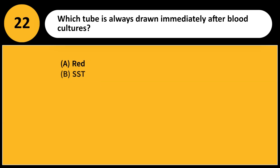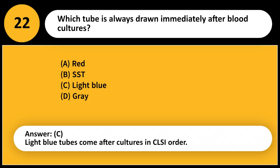Which tube is always drawn immediately after blood cultures? A. Red. B. SST. C. Light blue. D. Gray. Answer: C. Light blue tubes come after cultures in CLSI order.